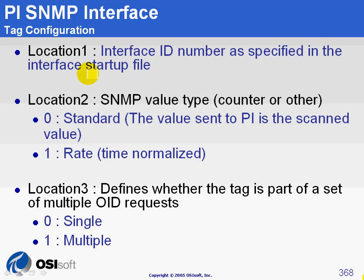Location 1 is as usual the interface ID number as you configured in ICU. Location 2 and location 3 are a little bit special in SNMP. Location 2 is the type of OID — the type of variable you want to monitor on your device.